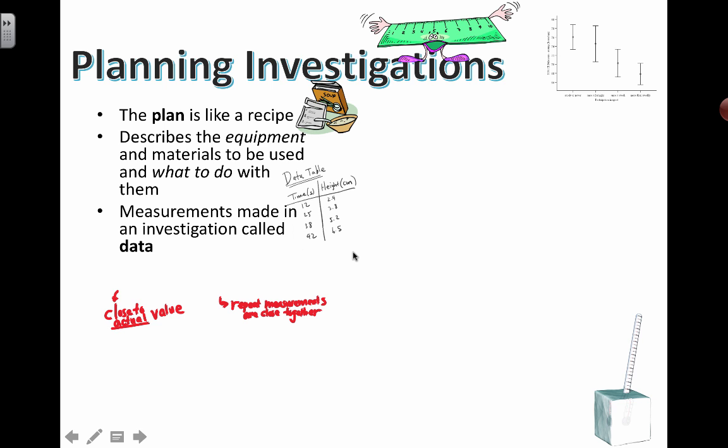In your plan, you have to give some instructions about how you're going to collect data or stuff that's going to be used to help you answer your question. So measurements made in an investigation are called data. Here's a small raw data table that you might scribble on a piece of paper and then later put it into a chart for easier understanding.